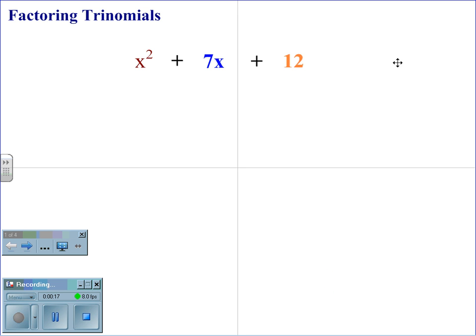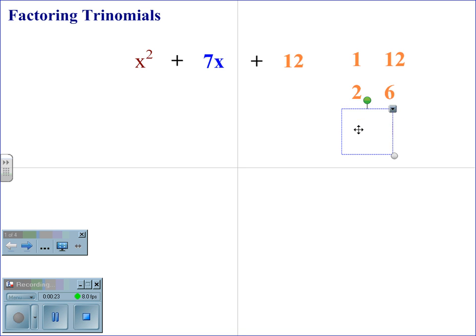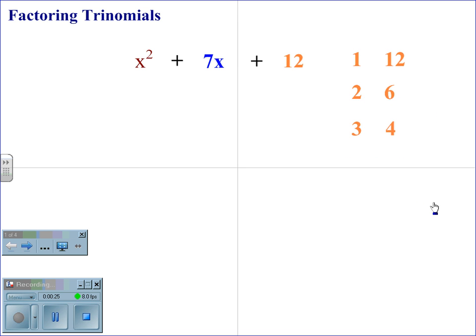First, begin by factoring the c term. The factors of 12 are 1 and 12, 2 and 6, and 3 and 4. These are the factors for the c term, 12.